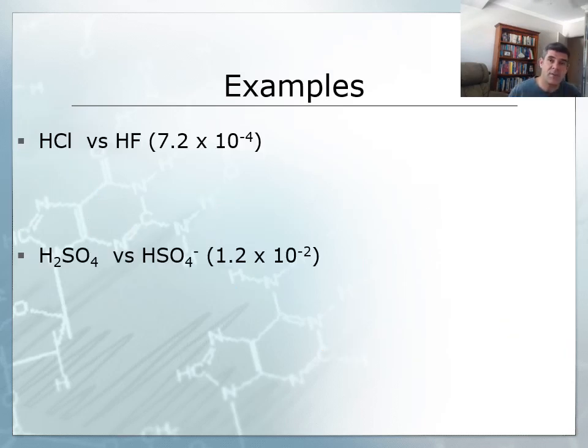To take a couple of specific examples and go just a little bit further, let's look at an example of a monoprotic and diprotic acids, one of which in each combination is strong, the other which is weak or weaker.